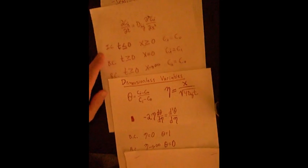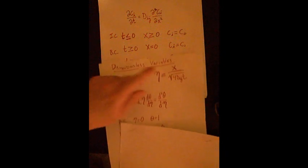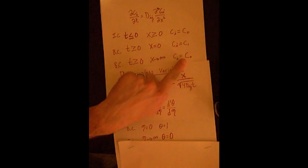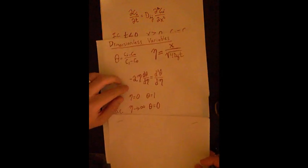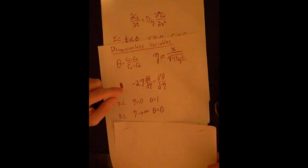The other one is, since it's x approaches infinity, plug it into there, eta approaches infinity. Concentration, Ci is equal to C0 at that location. We put that in there, C0 minus C0 is 0, so theta would be equal to 0.